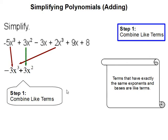Then we do the same for 3x to the second and there is no other so we just bring that down.